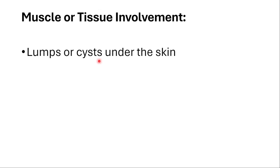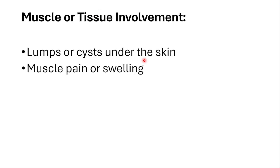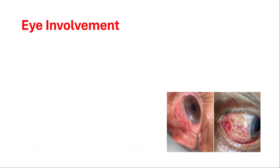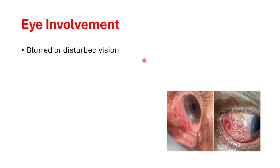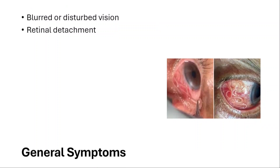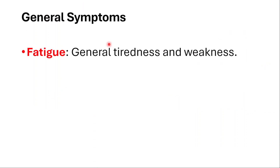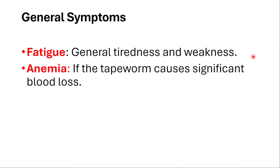Muscle or tissue involvement will cause lumps or cysts under the skin, and muscle pain or swelling. With eye involvement, you might experience blurred or disturbed vision and retinal detachment. General symptoms include fatigue, general tiredness, and weakness.